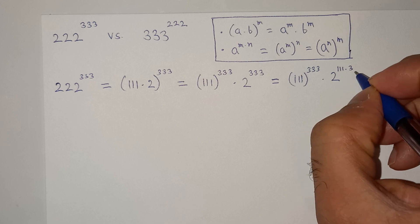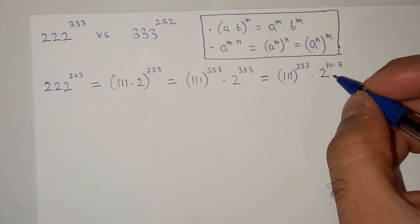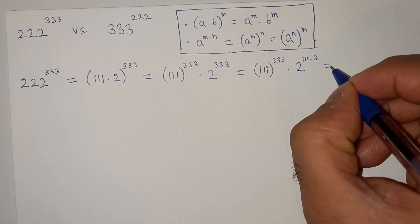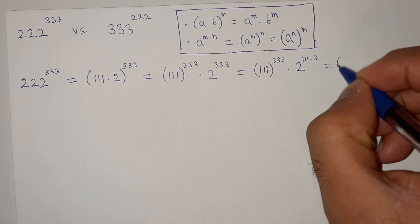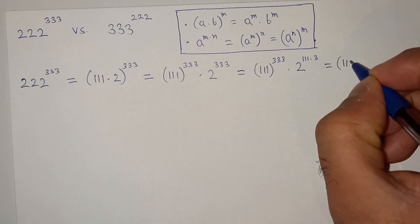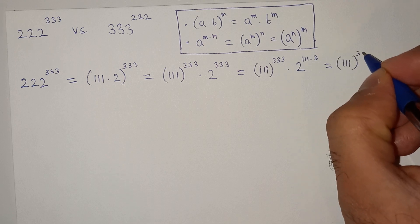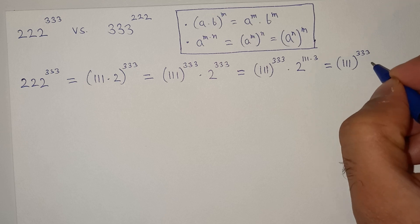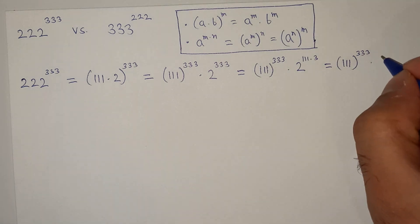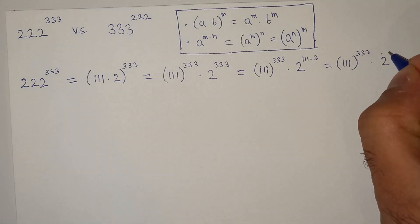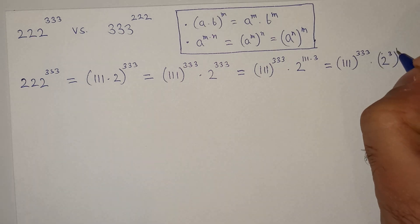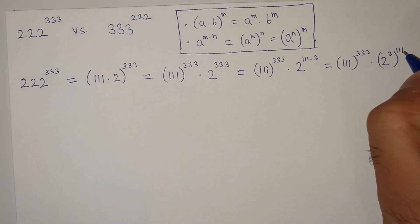This is in power. So this will be triple 1 power triple 3 multiplied 2 cube power triple 1.